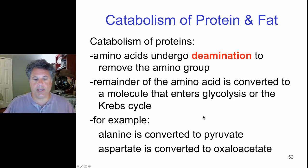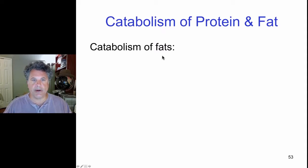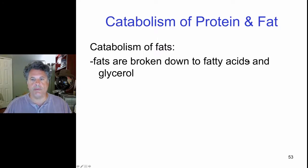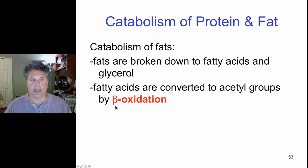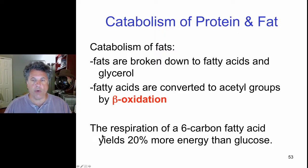Turning now to the catabolism of fats. Fats are broken down into glycerol and fatty acids. Glycerol can be removed, and the fatty acid chains can be converted to acetyl groups by a process called beta-oxidation. The important point here is that if you have a six carbon fatty acid, that can yield 20% more energy than glucose.